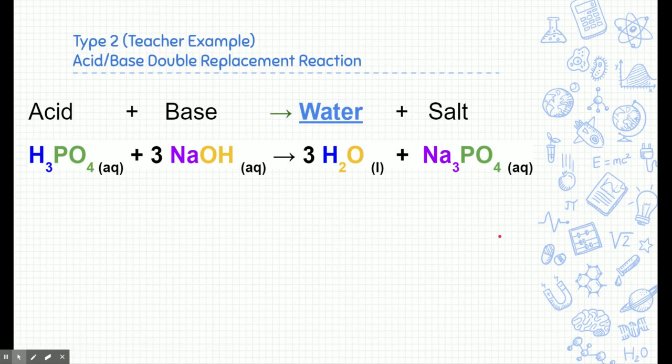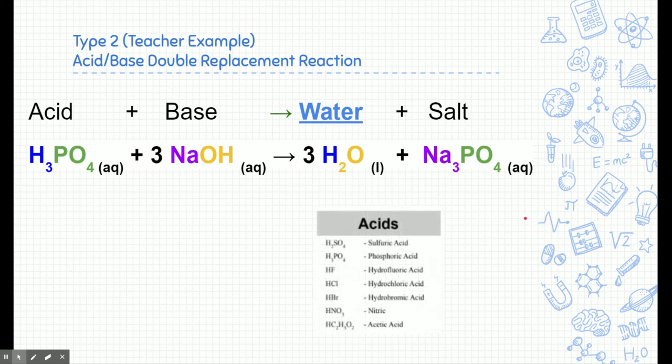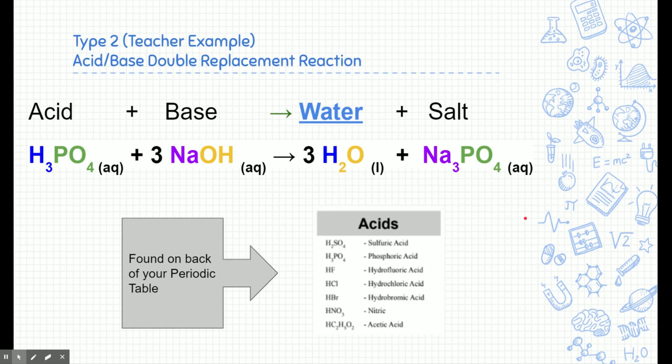Here's the second type of double replacement reaction — acid-base neutralization. We'll talk about this in a later module, but you might want to write it down as an example. It works on the same principle of positive charges canceling out negative charges, but in this case it forms water, which is a liquid. Acids are also found on the back of your periodic table, and we'll use those in later units.